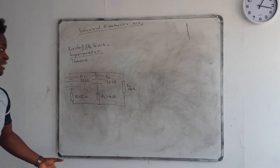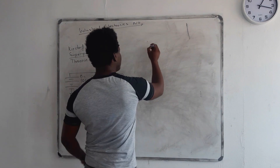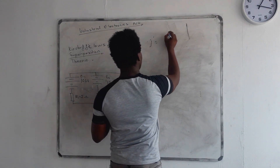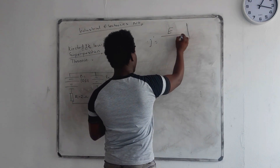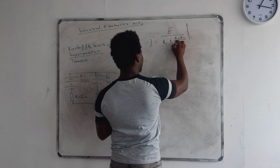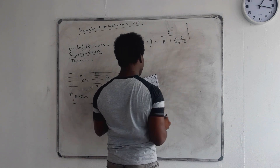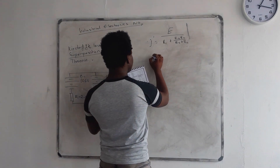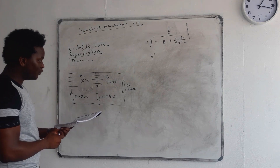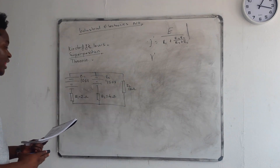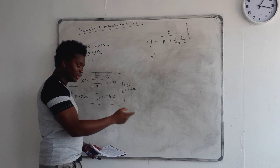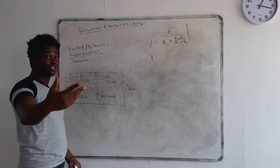Let's start with E1, so we're going to short circuit E2. The formula says we need to calculate the current, and the current is equal to E divided by R1 plus (R2·RL)/(R2+RL). After that we're going to calculate the voltage VAB — the voltage flowing through the load — using Kirchhoff's second law.